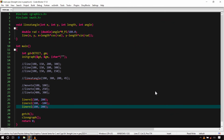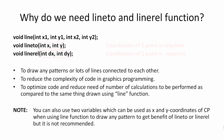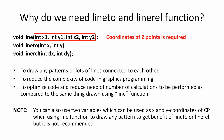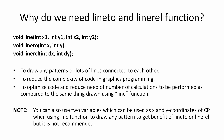You might ask: if there's already a line() function, why do we need lineto() and linerel()? These functions are useful when creating patterns where many lines are connected. The reason is simple: lineto() and linerel() each require only the coordinates of a single point, whereas line() requires coordinates of two points. This reduces code complexity and requires fewer calculations when drawing connected line patterns. That's all for now — in the next video I'll explain drawing rectangles and squares. Keep practicing, see you next time!